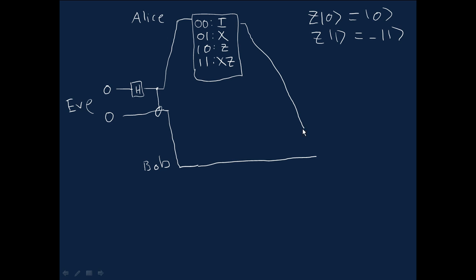So Bob now has both qubits in his possession. And he's going to do a few little things to extract the information. He's going to do a CNOT gate, and he's going to do a Hadamard. It's actually the exact reverse of what Eve did.